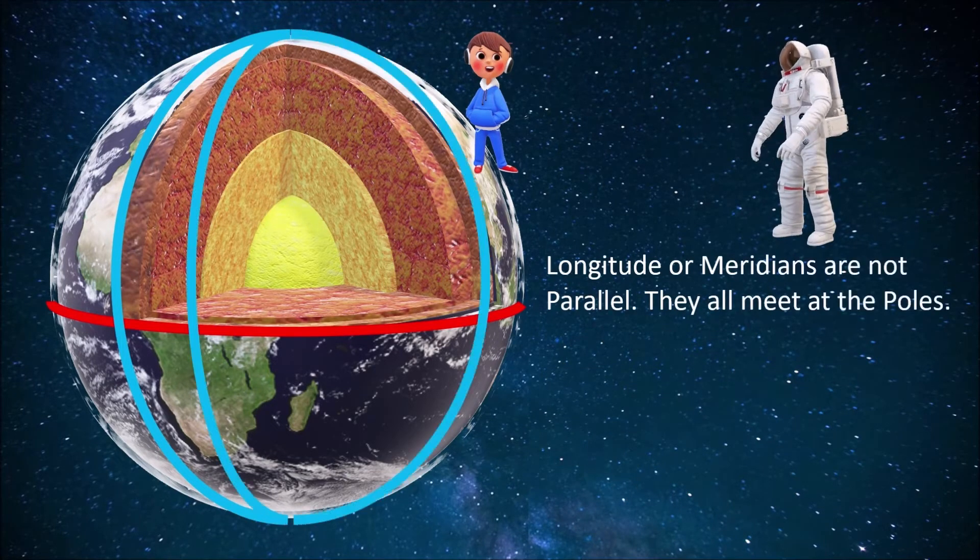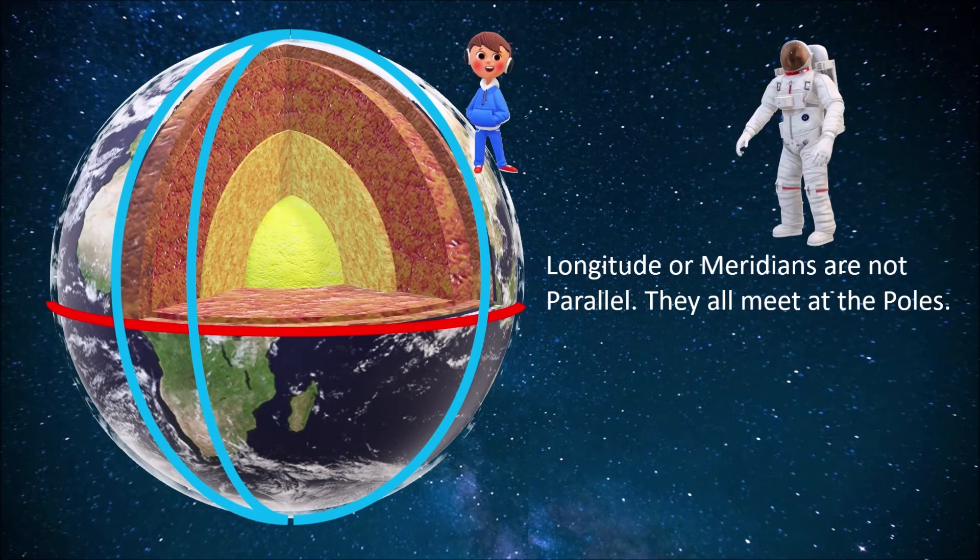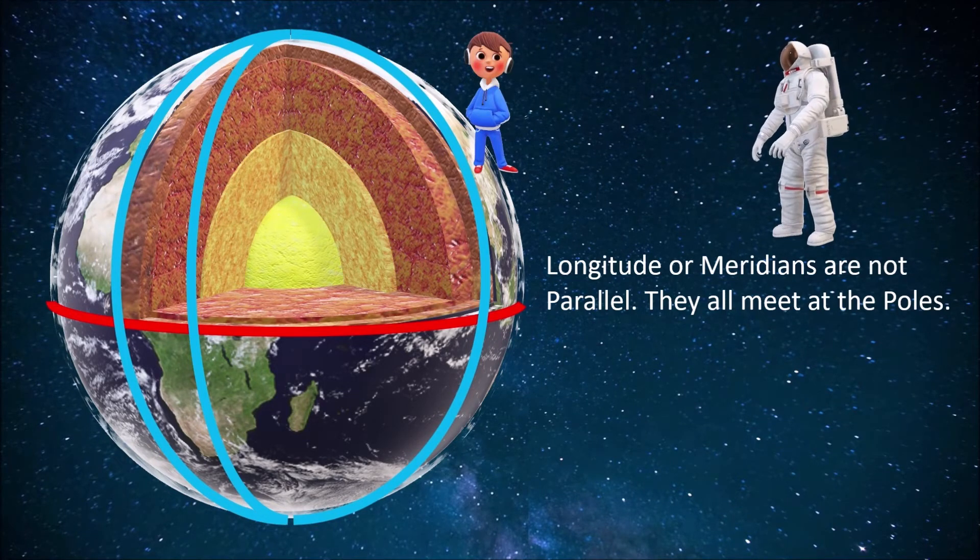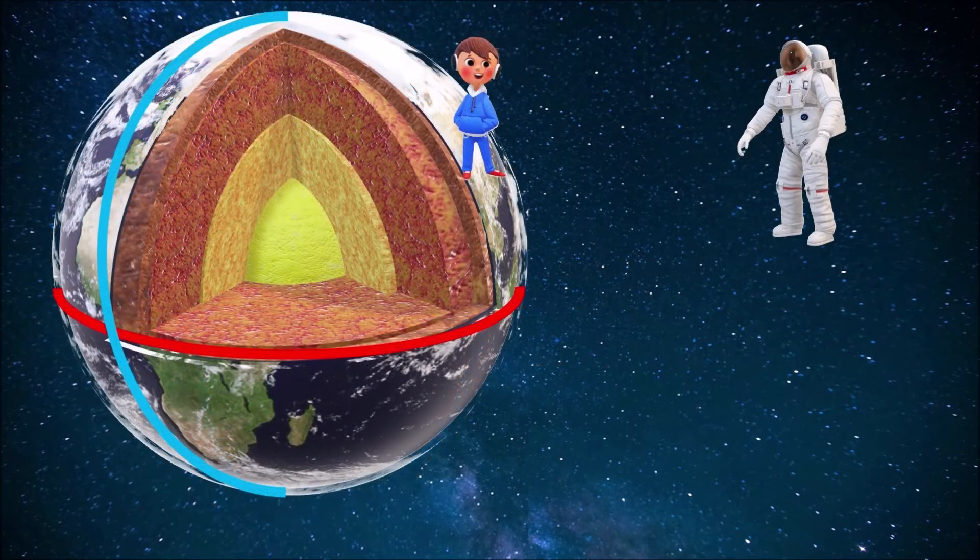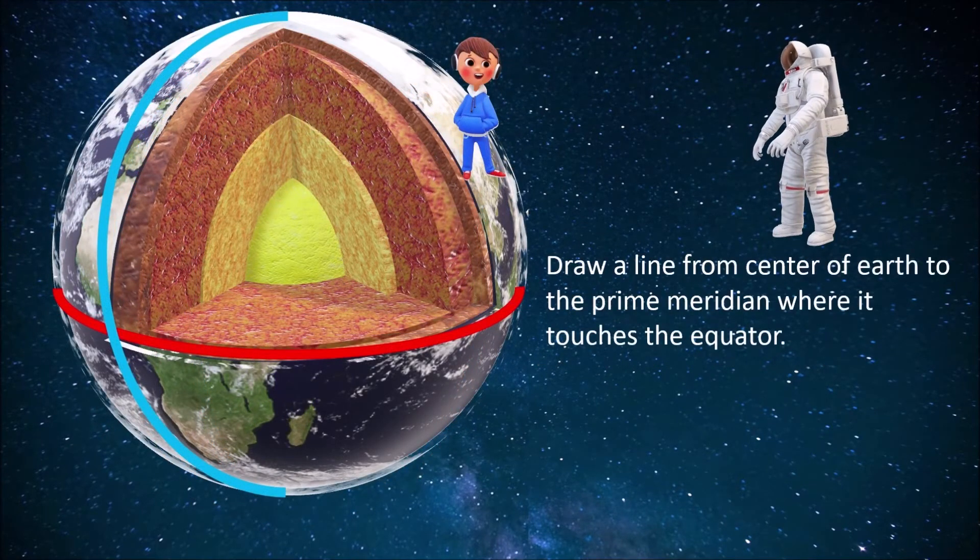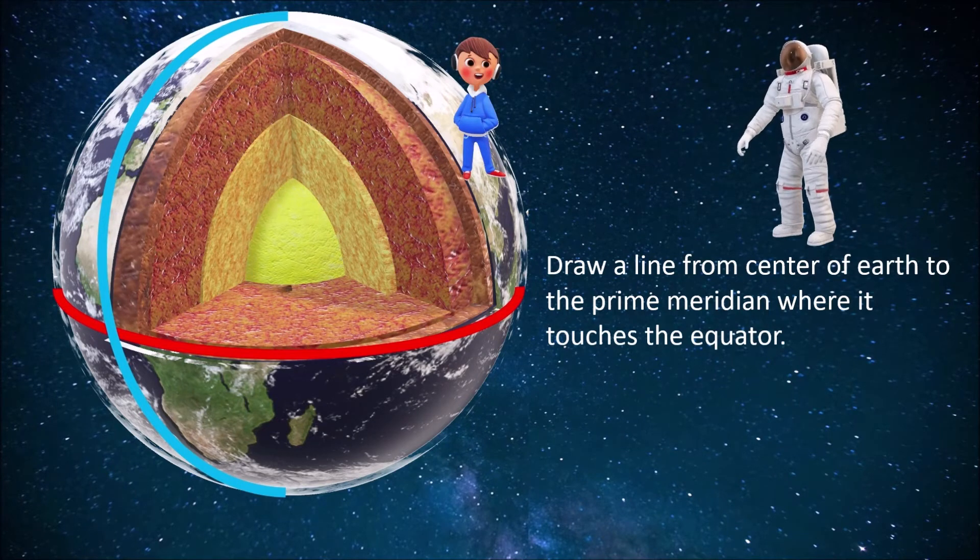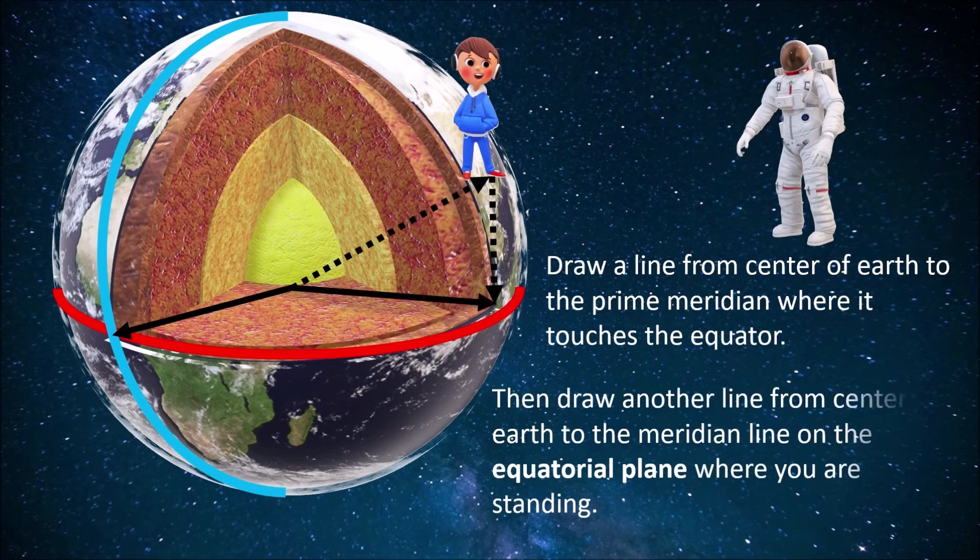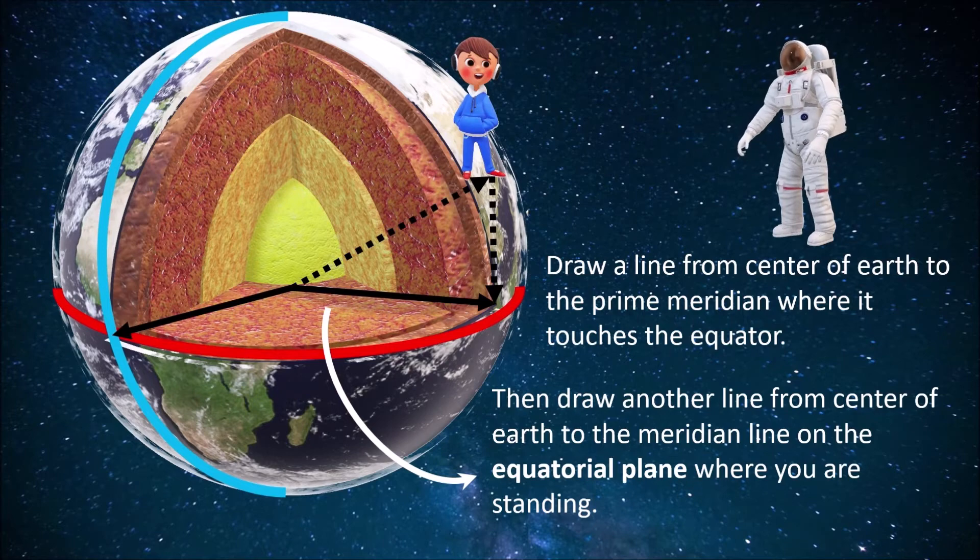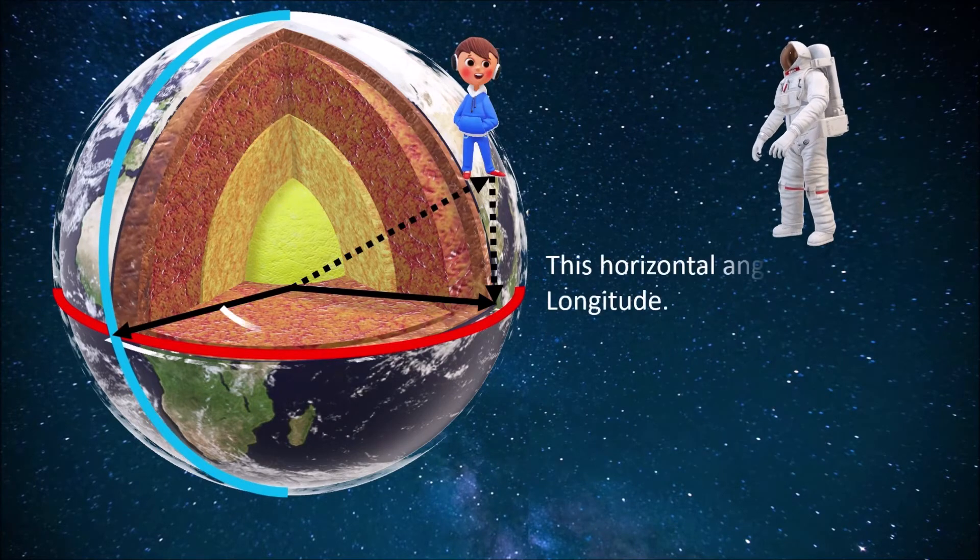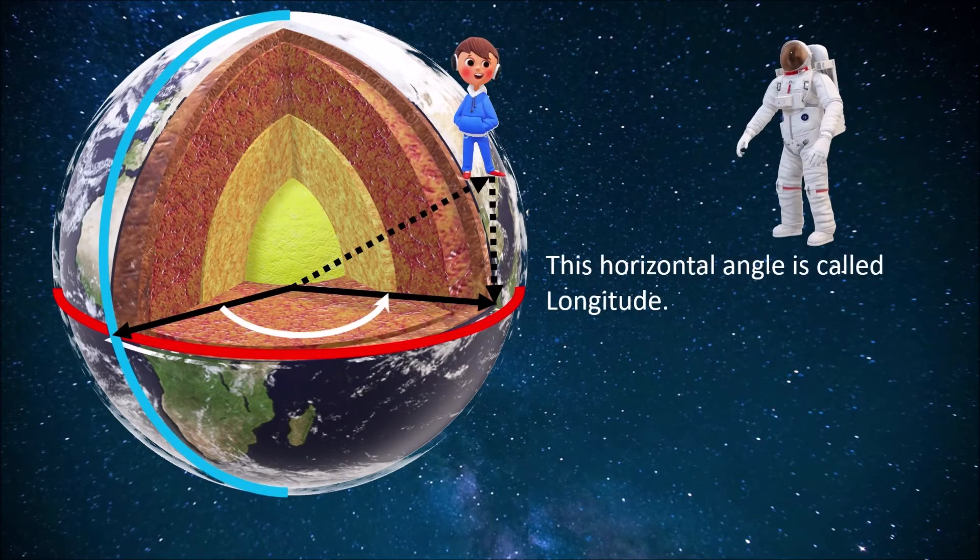Longitude or meridians are not parallel. They all meet at the poles. So, how do you measure longitude? Draw a line from the center of earth to the prime meridian where it touches the equator. Then, draw another line from the center of the earth to the meridian line on the equatorial plane where you are standing. This horizontal angle is called longitude.